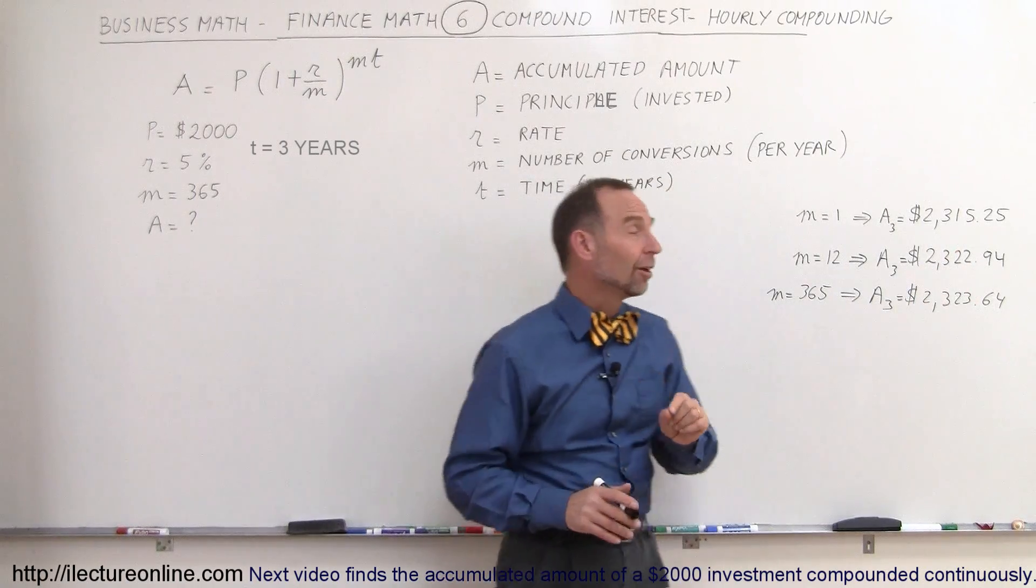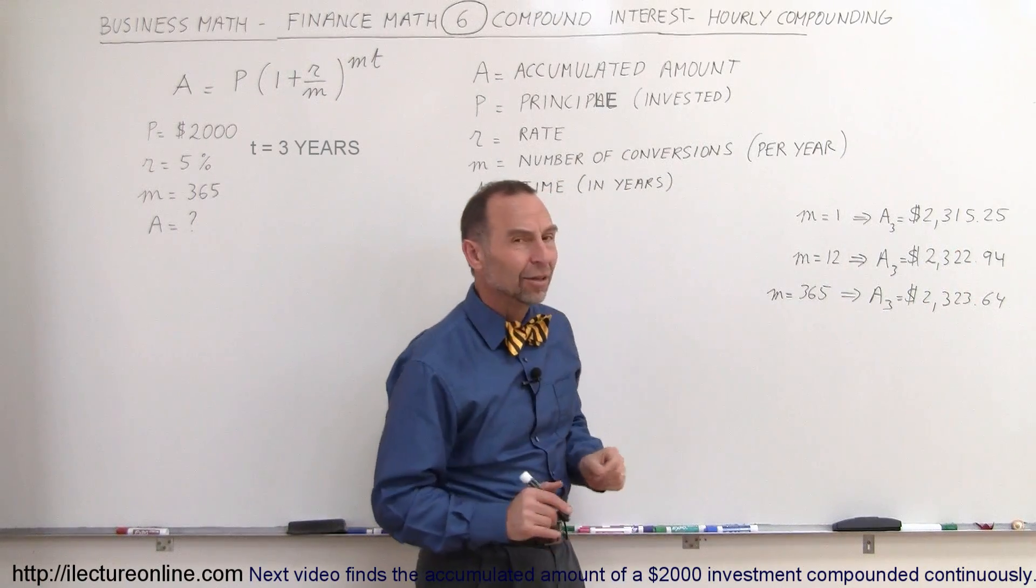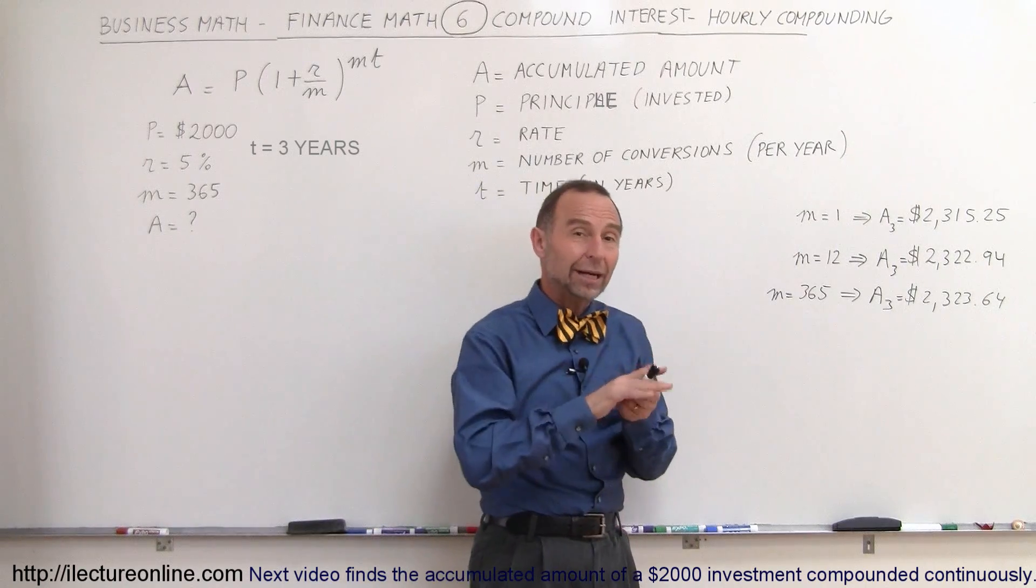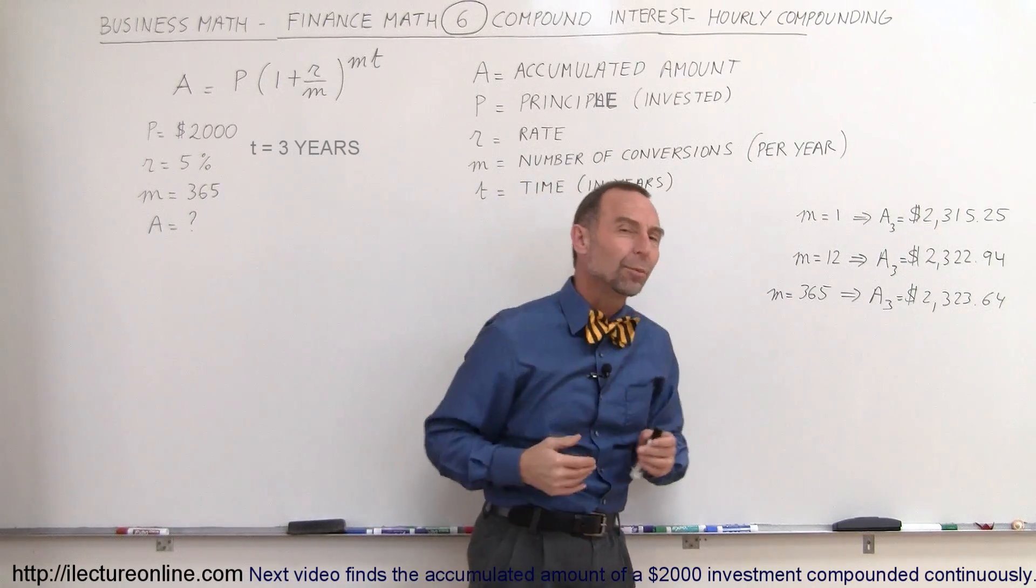You can see there's not a lot of difference between monthly and daily. So what if we calculate the interest earned every hour and add it to the principal? How much more money would we earn?